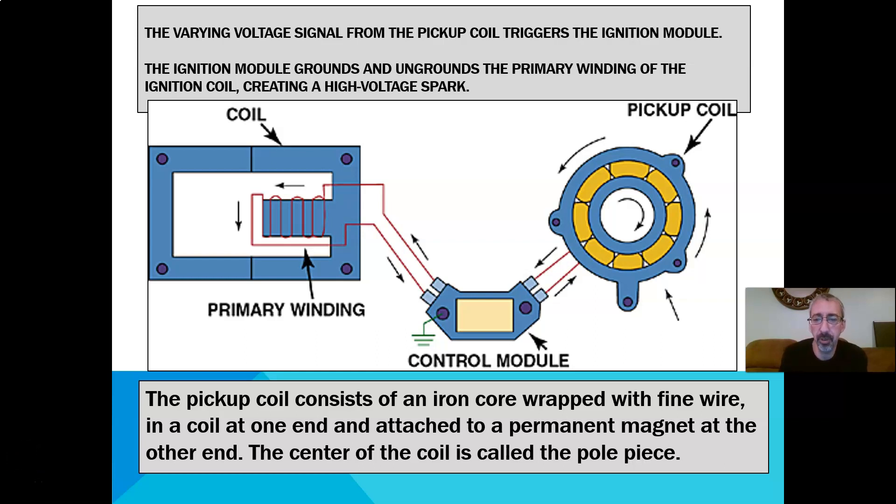This once again is showing a pickup coil in a distributor. You can see the ignition control module in the center and the coil with the primary windings. What will happen is this pickup coil will develop a magnetic field. The magnetic field will collapse because of a particular cylinder location. It'll send that signal back to the control module and that will control the current flowing into those primary windings.